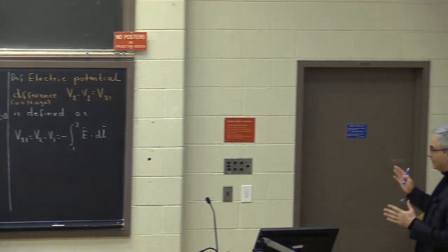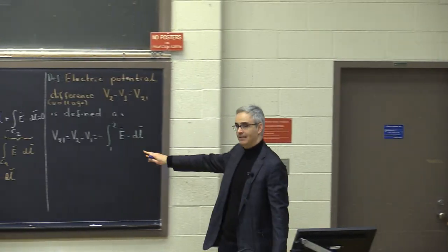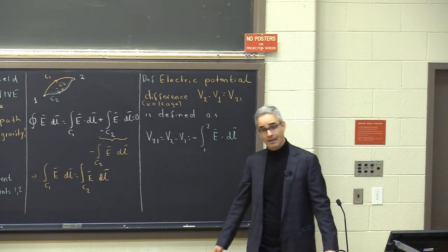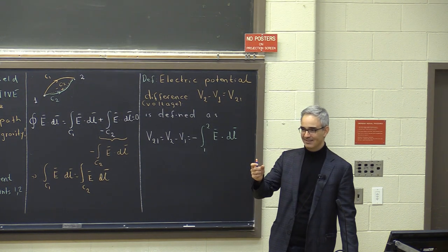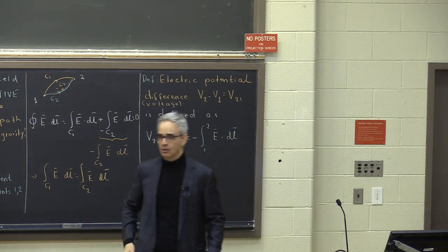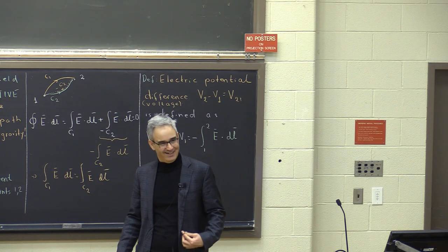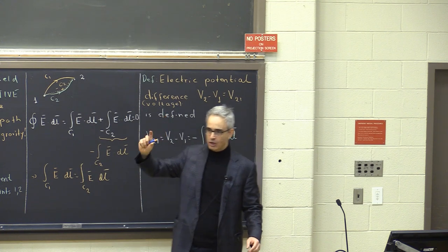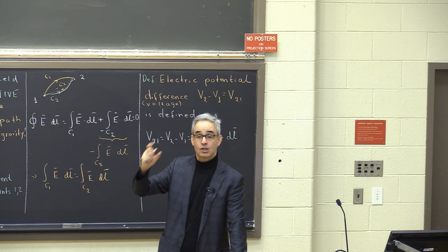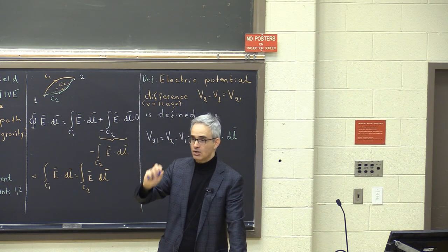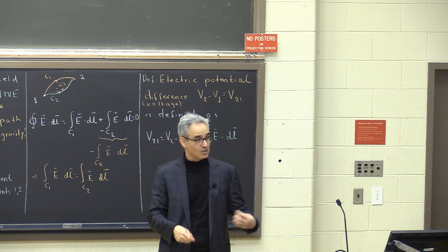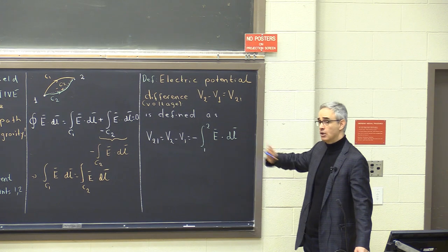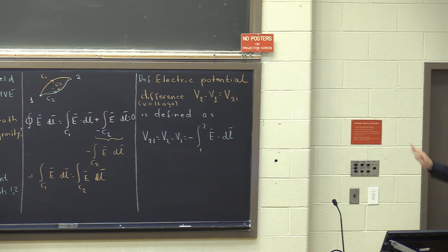This name, electric potential difference, is a technical term for what is commonly known as voltage. This definition is possible precisely because the integral is path independent. You see here tons of wires connecting to microphones and batteries. A 1.5-volt battery — the voltage it provides does not depend on how you connect the wires. That is the physical consequence of this mathematical fact. No matter how you connect your wires, the company tells you the truth that it provides 1.5 volts. If it were not path independent, voltage would not be a thing.